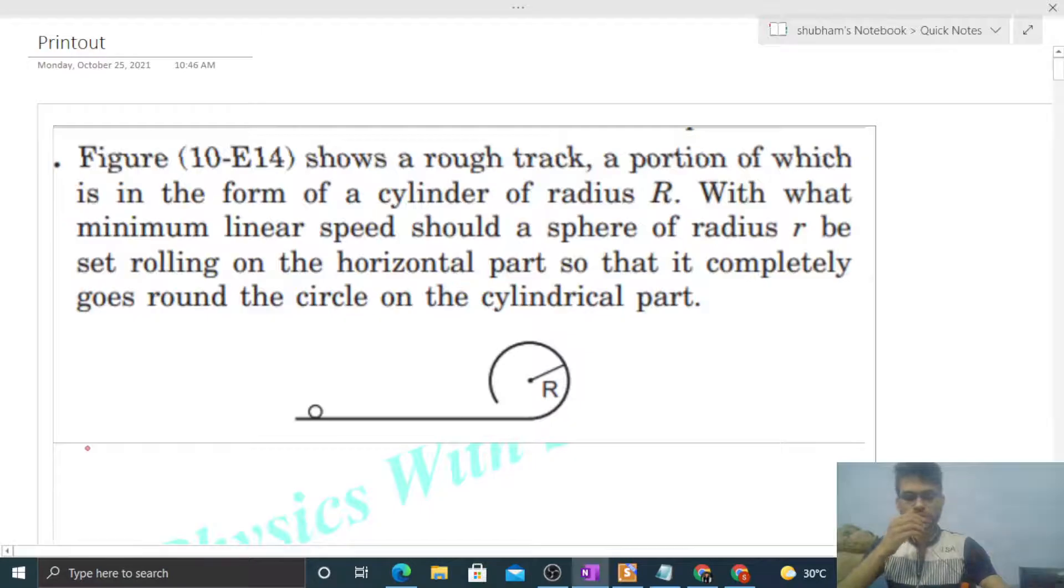Okay, hi everyone. Today let's discuss this interesting problem. It says the figure shows a rough track, a portion of which is in the form of a cylinder of radius capital R. With what minimum linear speed should a sphere of radius small r be set rolling on the horizontal part so that it completely goes around the circle on the cylindrical part?